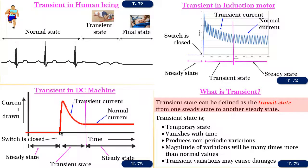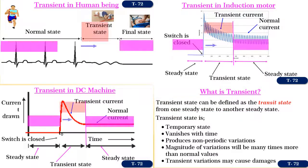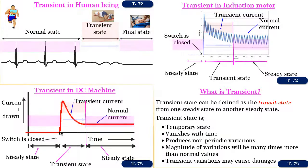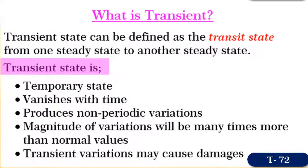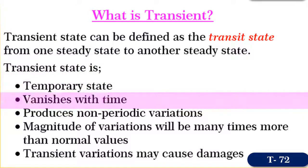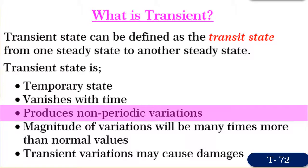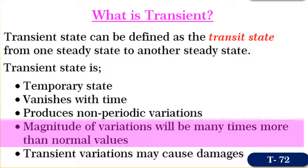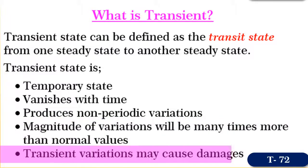Observe that this happens in all the examples that we have described. It may also be stated that the transient state is a temporary state. It vanishes with time, produces non-periodic variations, and the magnitudes of these non-periodic variations will be many times more than the normal values. Because of these reasons, transient variations may cause disastrous effects when they occur.